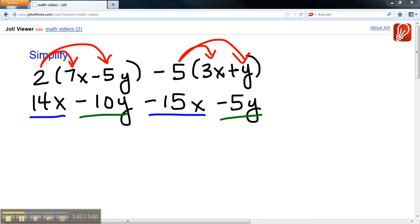So I have 14x minus 15x. 14 minus 15 gives me negative 1x, which we write as negative x. We don't need to write that 1.